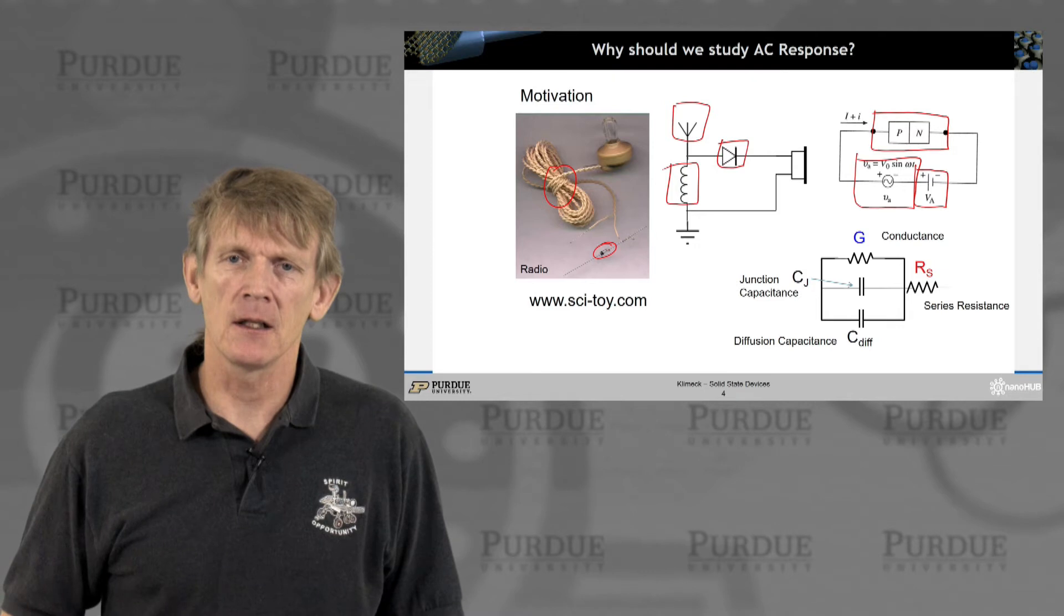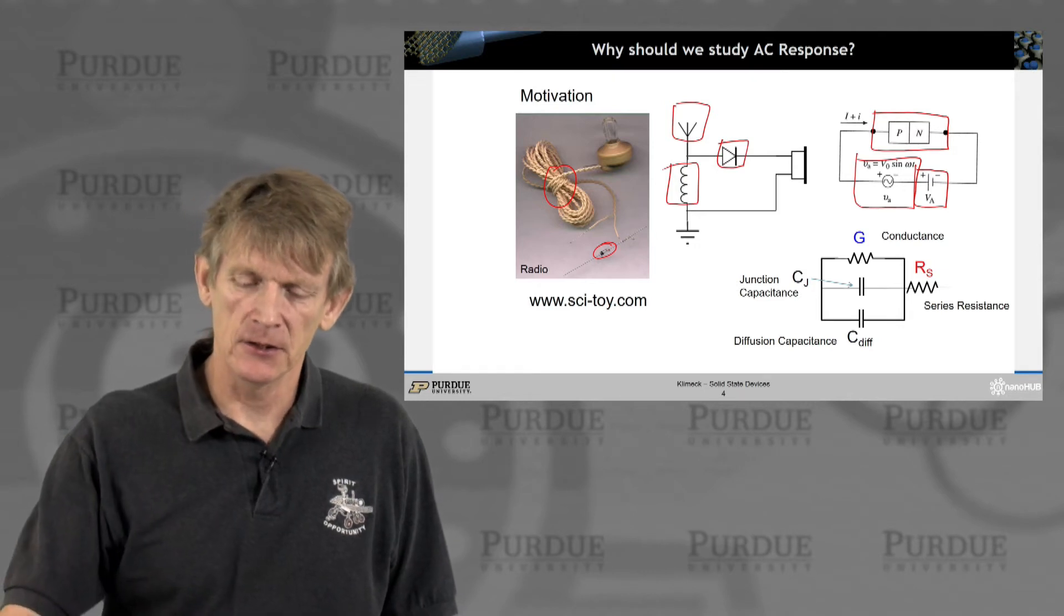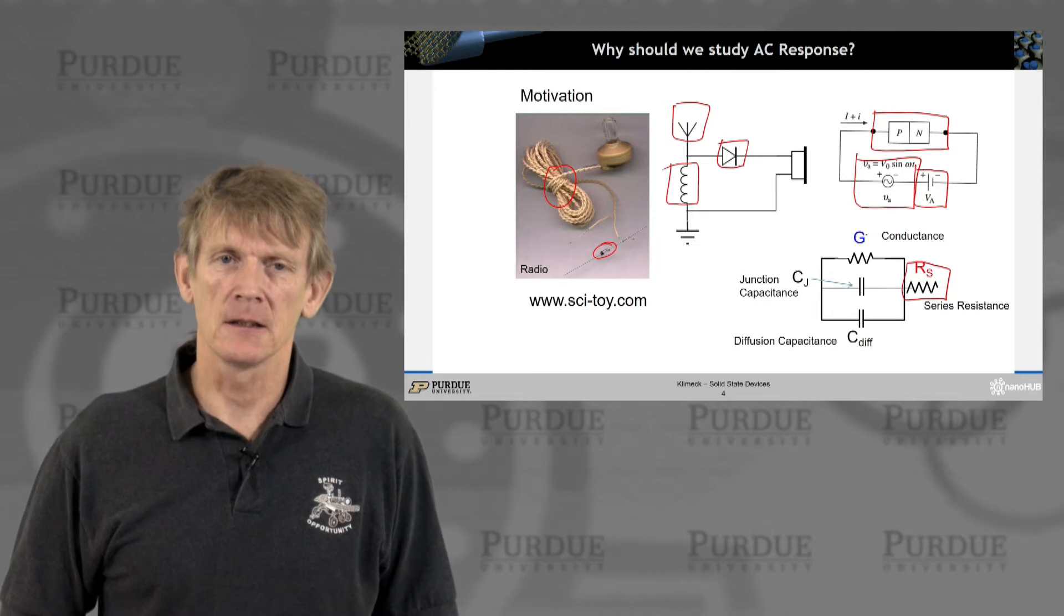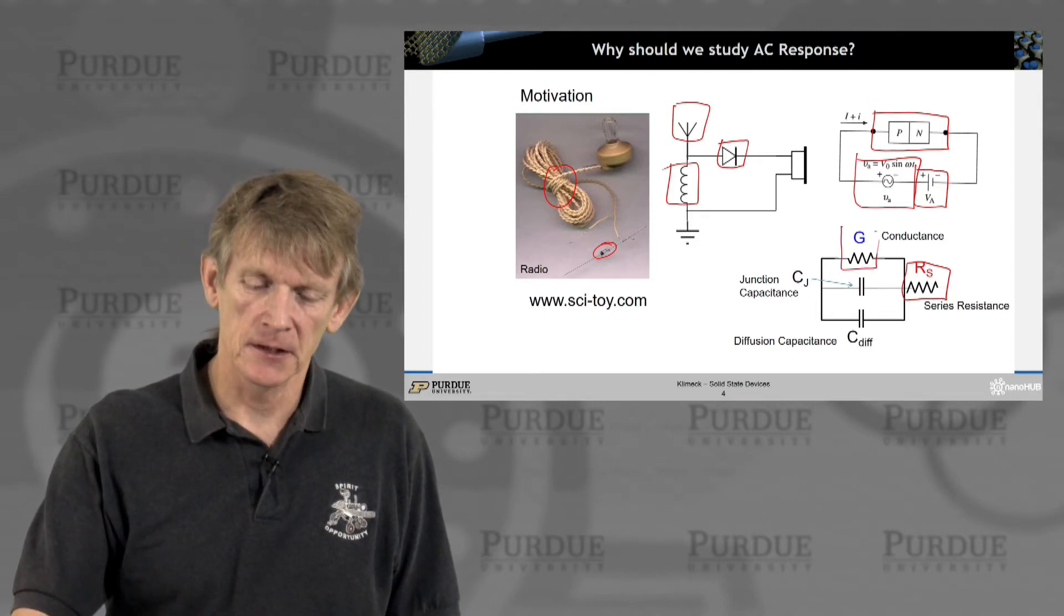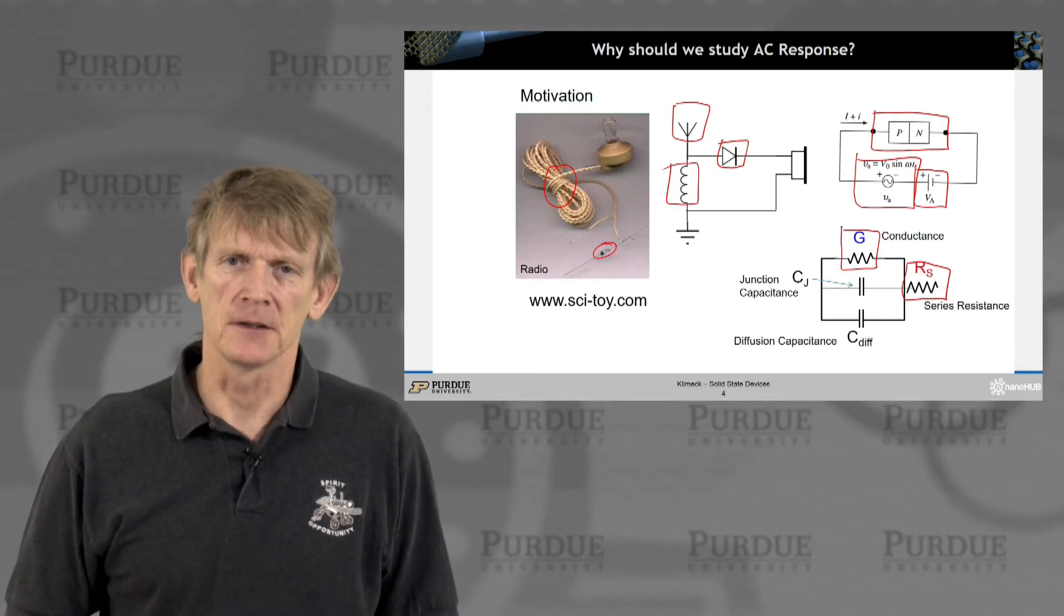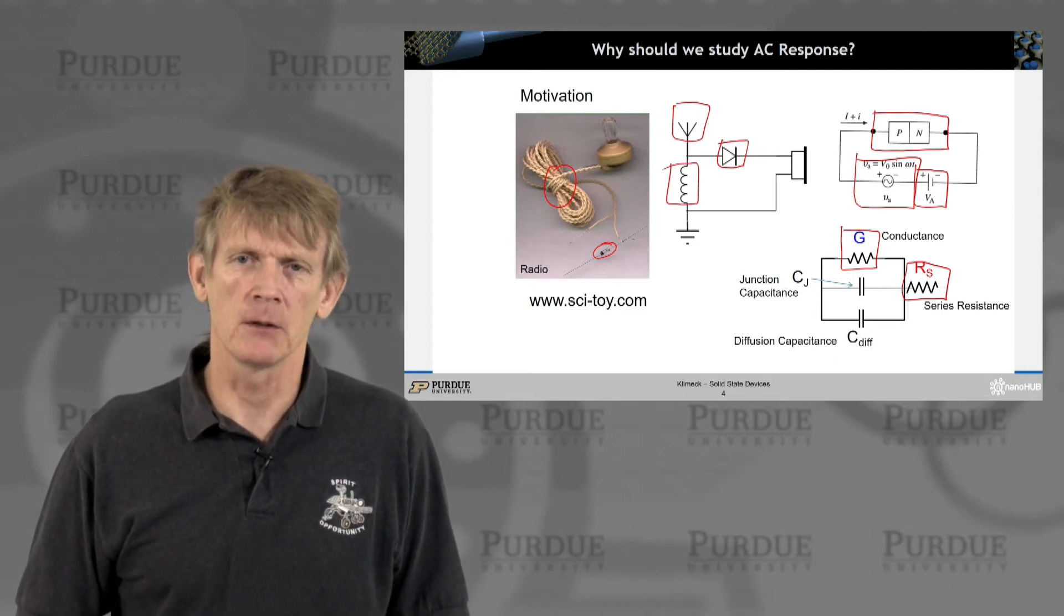The equivalent circuit model consists of a series resistance and a parallel element which has a conductance in it, a junction capacitance, and a diffusion capacitance. We'll pick up all these circuit elements one by one.